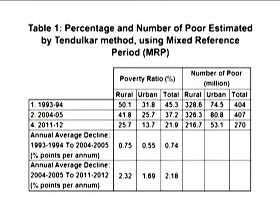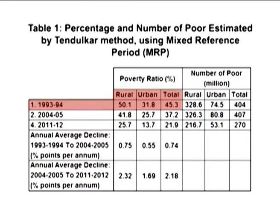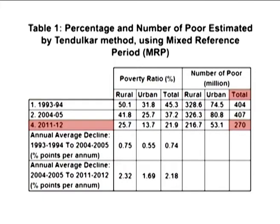It was 51.1 percent in rural areas, 31.8 percent in urban areas, and 45.3 percent for the country as a whole in 1993-94. In 2011-12, India had 270 million persons living below the poverty line — that is the Tendulkar poverty line — as compared to 407 million in 2004-05, a reduction of 137 million persons over the seven-year period.